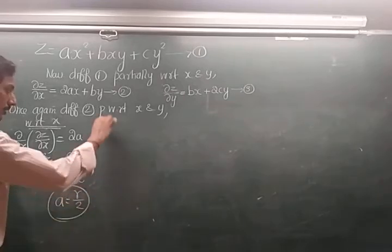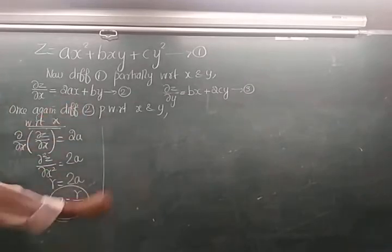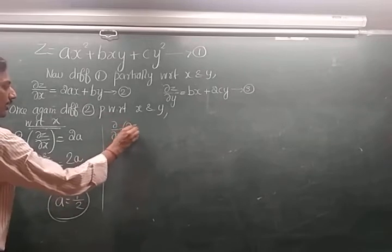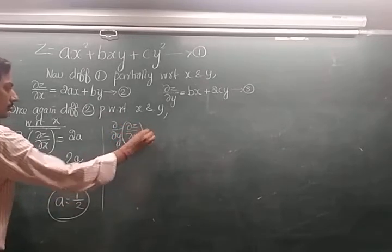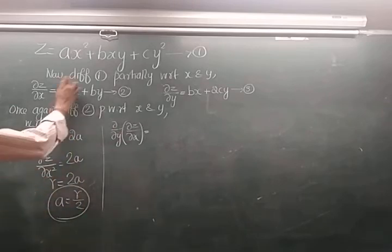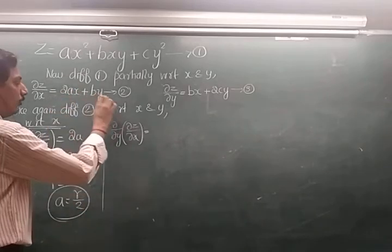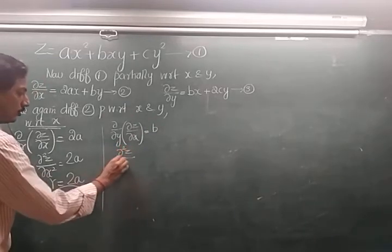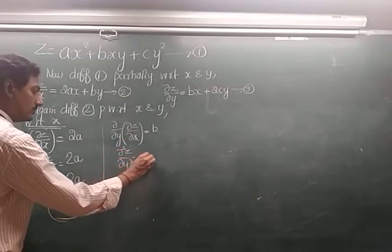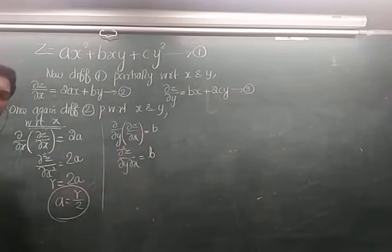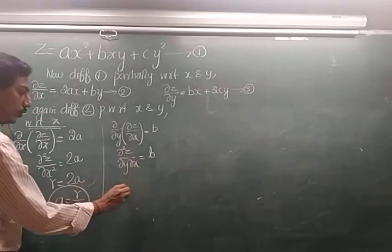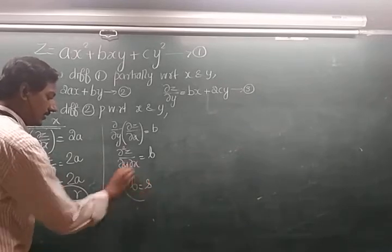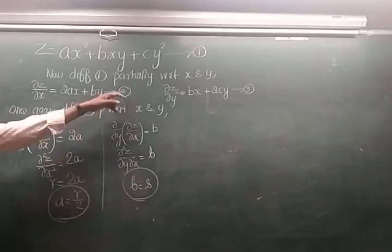Now differentiate equation 2 partially with respect to y. The right-hand side: 2ax has no y so gives 0, and by gives b. So ∂/∂y of ∂z/∂x = b, which is the mixed partial derivative ∂²z/∂y∂x, denoted s. Therefore b = s.